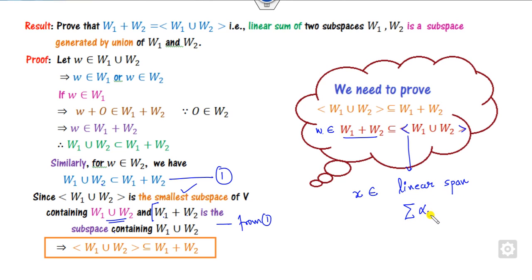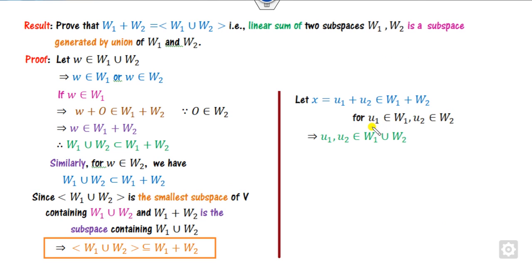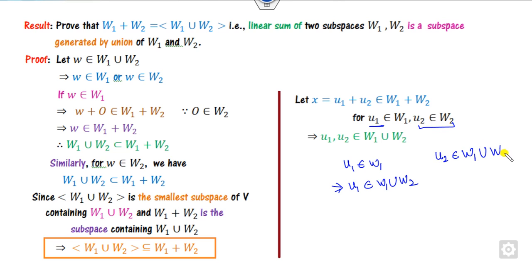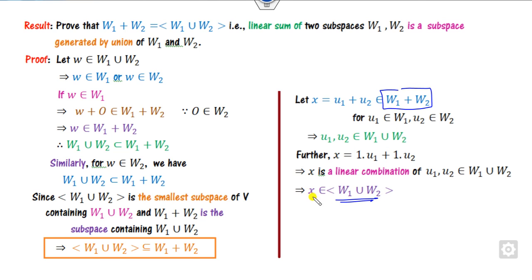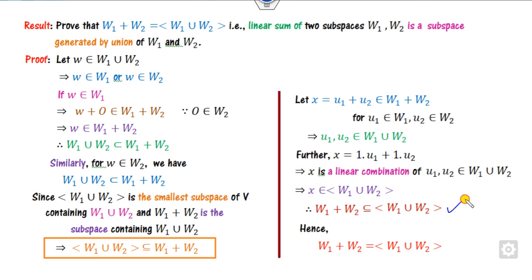The linear span is the linear combination of elements. Since u1 belongs to w1, it belongs to the union, and similarly for w2. So x is a linear combination: we can write it as 1·u1 + 1·u2, which is αᵢuᵢ — the linear combination. By the definition of the linear span we reach the conclusion. From both directions, we establish the equality.